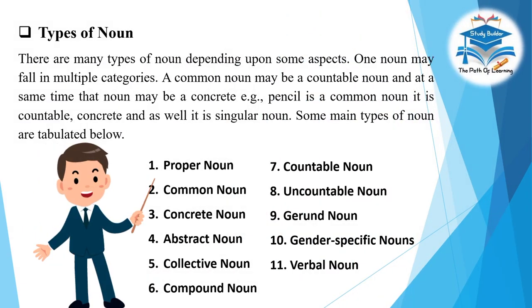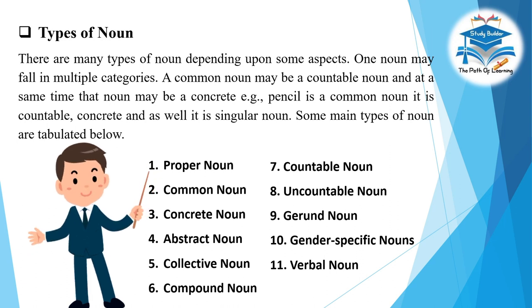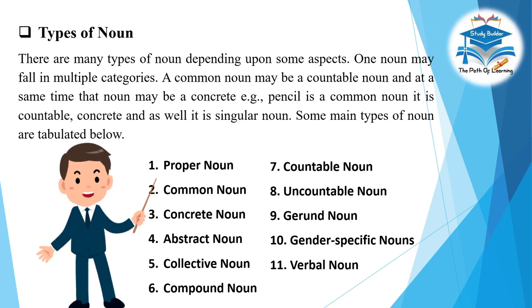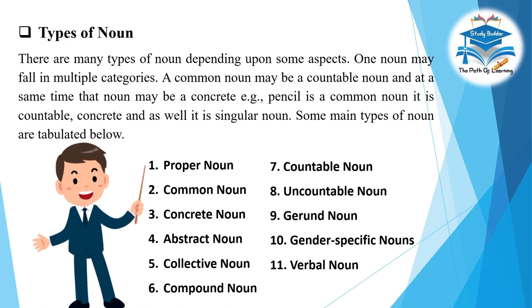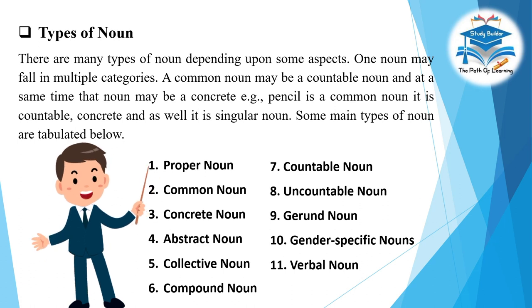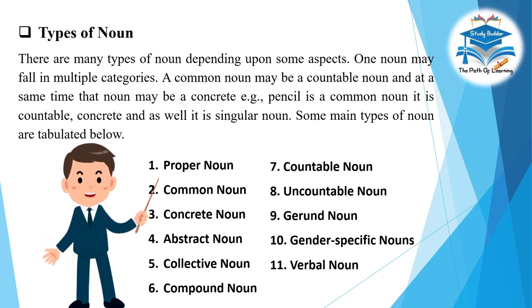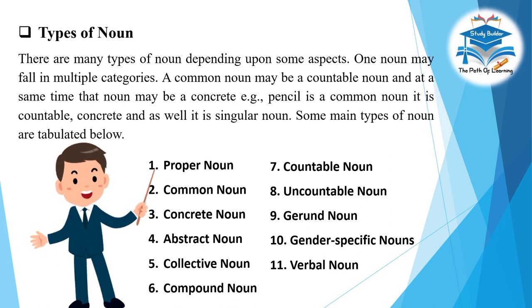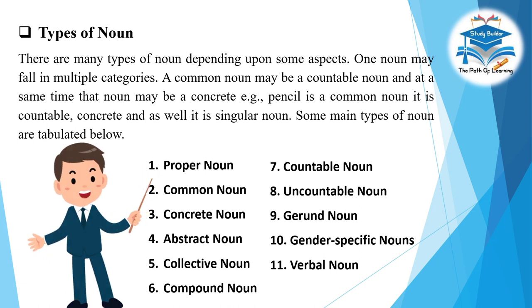There are many types of noun depending upon some aspects. One noun may fall in multiple categories. A common noun may be a countable noun and at the same time that noun may be a concrete noun — for example, pencil is a common noun, is countable, concrete, and also a singular noun. Some main types of noun are: Proper noun, Common noun, Concrete noun, Abstract noun, Collective noun, Compound noun, Countable noun, Uncountable noun, Gerund noun, Gender-specific noun, and Verbal noun.